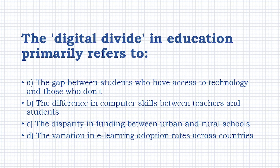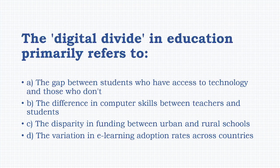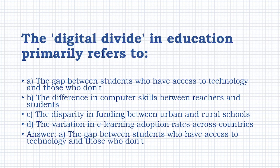The digital divide in education primarily refers to: the gap between students who have access to technology and those who don't, the difference in computer skills between teachers and students, the disparities in funding between urban and rural schools, or the variation in e-learning adoption rates across countries. The answer is option A: the gap between students who have access to technology and those who don't.